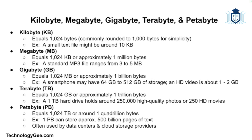Now let's move on to the next levels of units: the kilobyte, megabyte, gigabyte, terabyte, and petabyte. These units build upon each other and are used to measure larger quantities of data. The kilobyte is 1024 bytes, although in many cases it is rounded down to just 1000 bytes for simplicity. To put this into context, a small text document might be around 10 kilobytes in size.